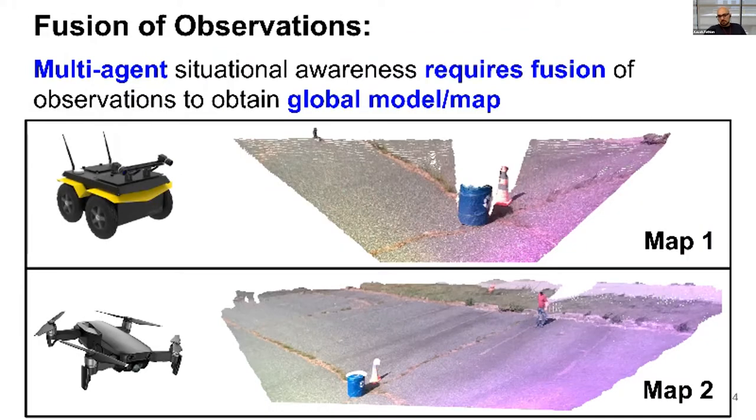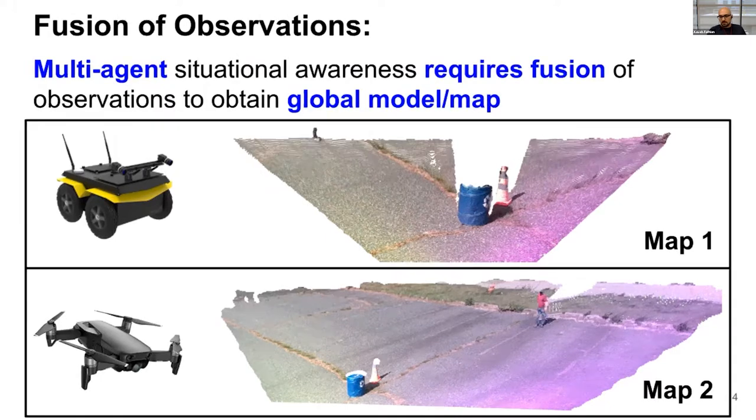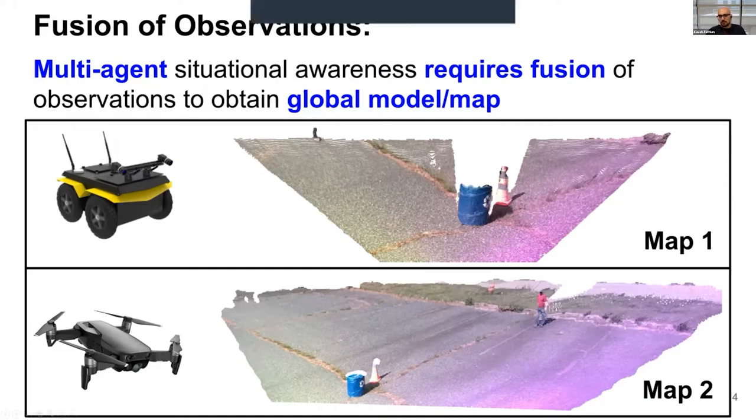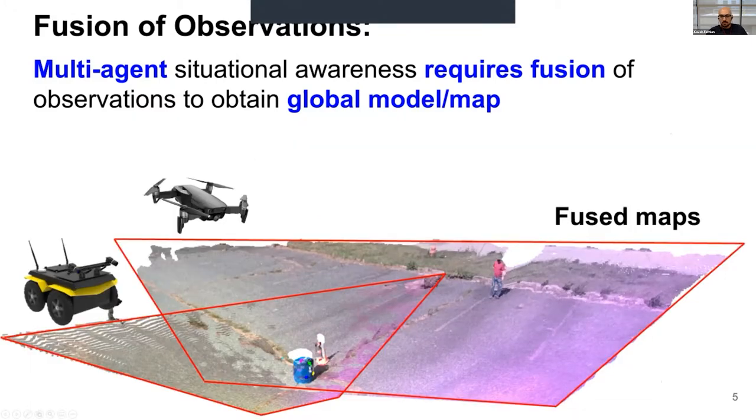Multi-agent situational awareness requires fusion of observations by these agents in order to get a global map that's useful. Here's a little cartoon of this. Suppose I have two robots here, and they all have this RGBD map of the environment, map one and two. What I really want to do is somehow fuse and combine them to get a global, consistent map of this environment that's generated jointly by them.